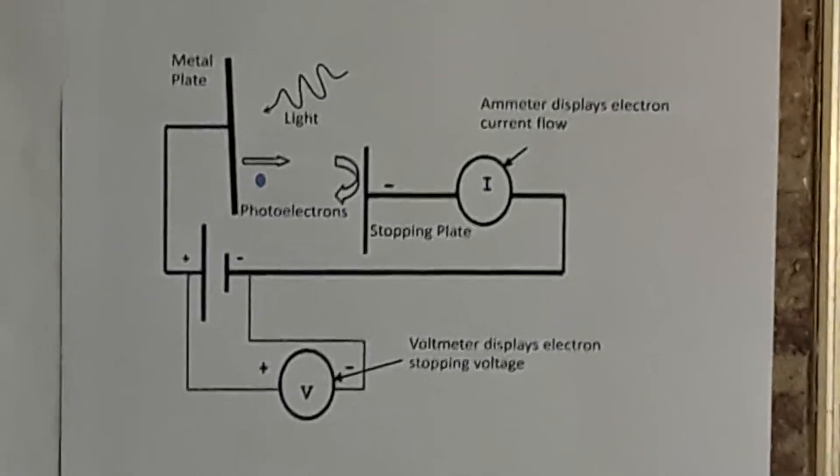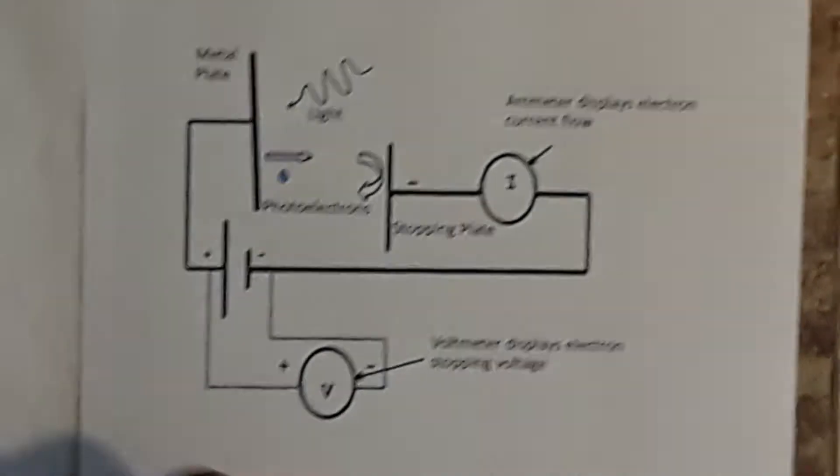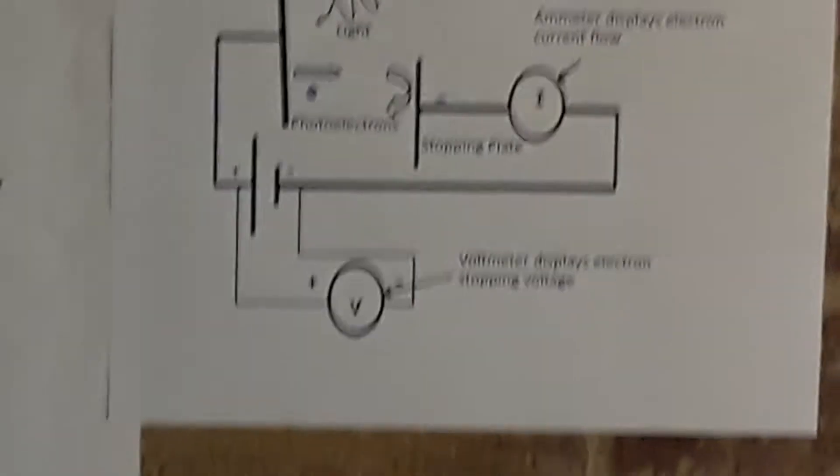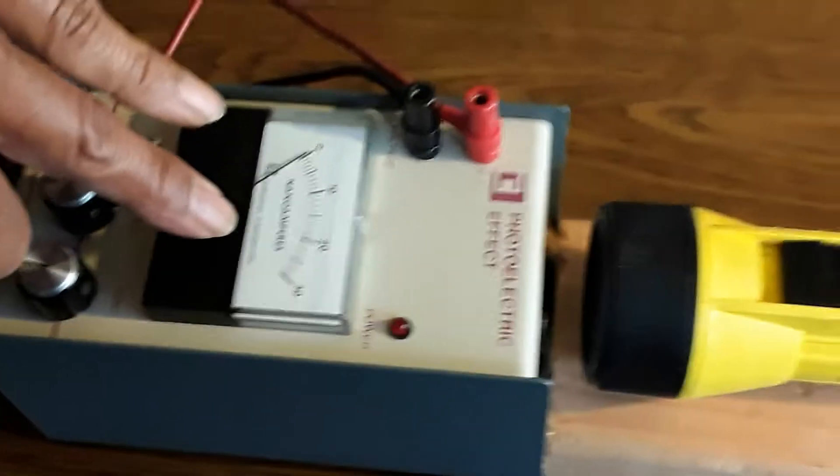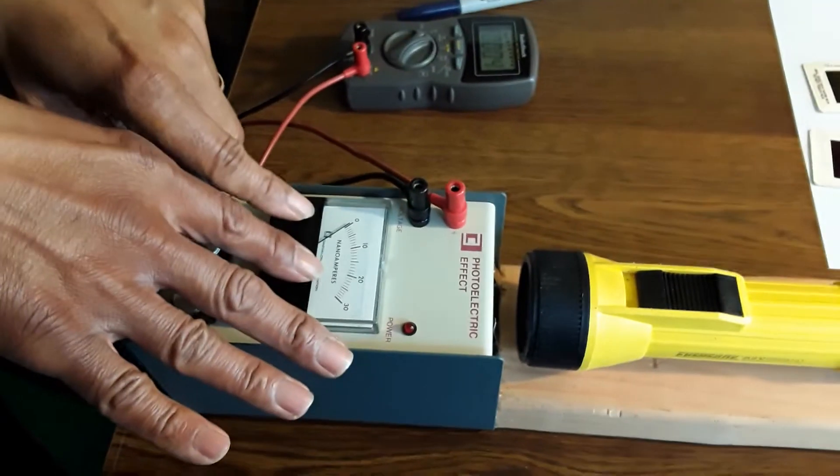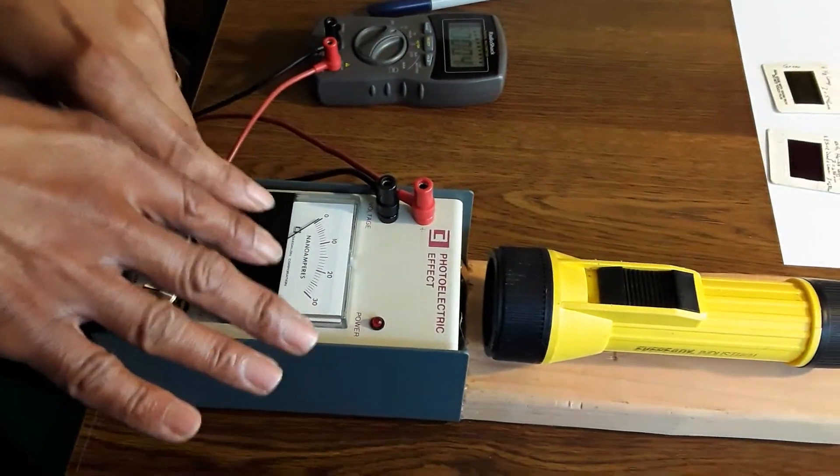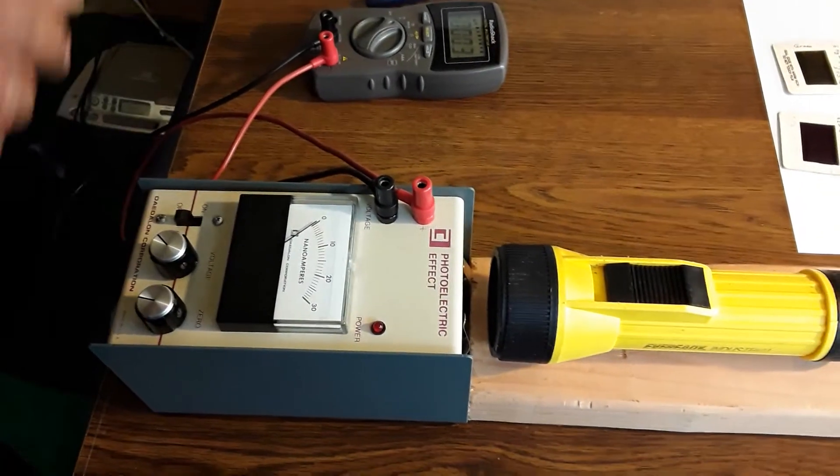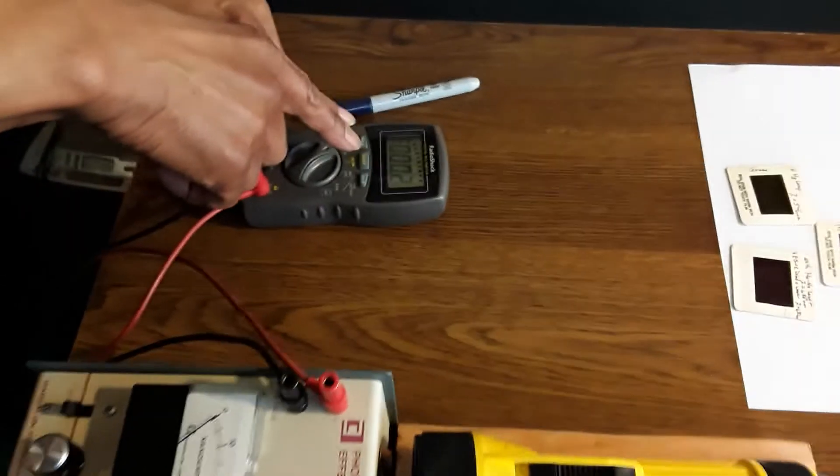And then we're going to stop the current from flowing by putting this backboard shown here. Now we're going to measure the current flow with the nanoamp. This ammeter is right here. It's measuring nanoampers and this is going to measure the back voltage here.